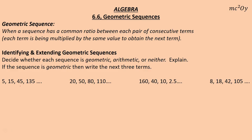To decide whether a sequence is geometric — meaning you're multiplying by the same thing — or arithmetic, which means you're adding the same thing each time, or neither, which means it may be some other pattern, what we're going to do first is look at a set of numbers and see if we're multiplying by the same thing.